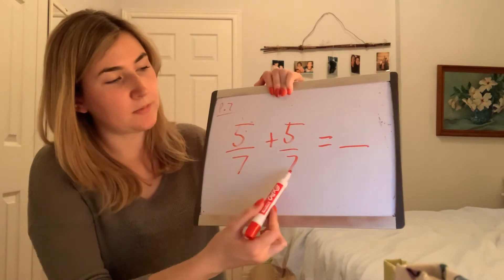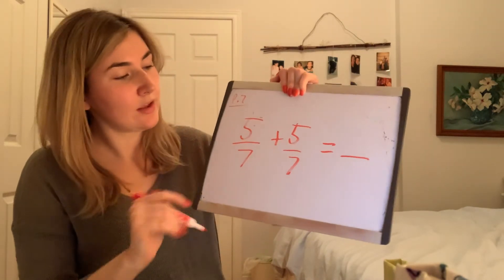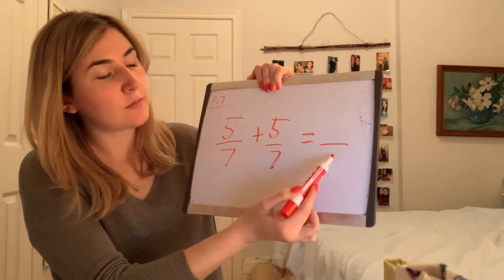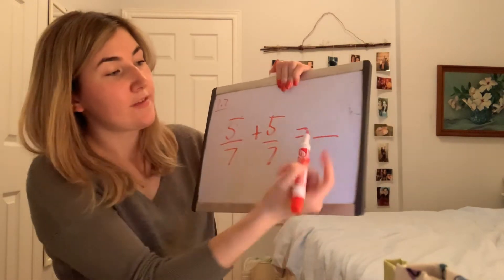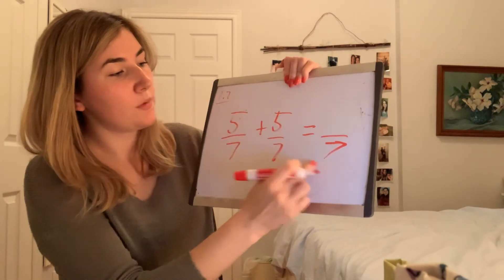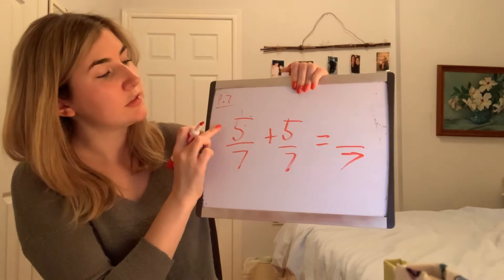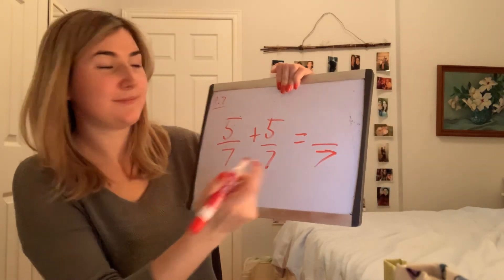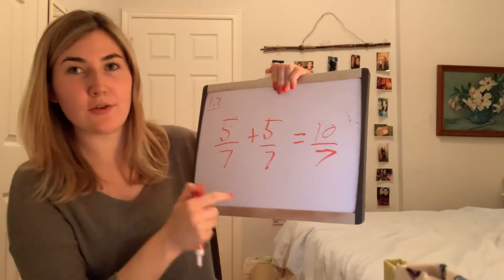Let's look at C: 5 over 7 plus 5 over 7. Now that we're adding, we have the same bottom number already, which is a great start. What will our bottom number be for our answer? 7 — our bottom number always stays the same. So let's look at our top: 5 plus 5 equals 10. Our answer is 10 over 7. You can pause this video now, finish up part 7, and then we'll get back for part 8 together.